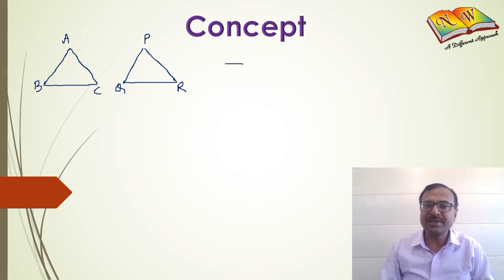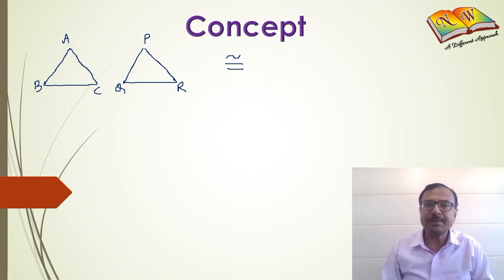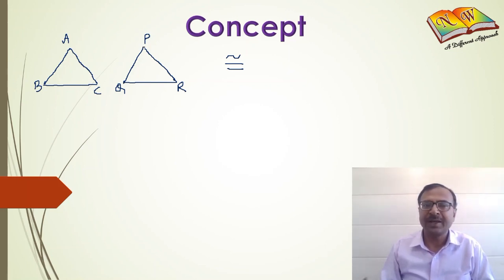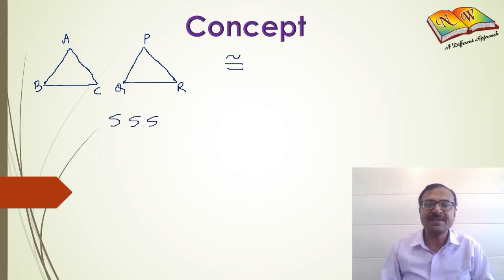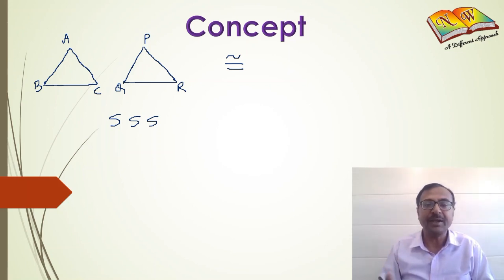This is the symbol which we use for congruence of triangles. There are some criteria through which we can prove that two given triangles are congruent. One of the criteria is SSS — that means if all three sides of one triangle are equal to the corresponding sides of the other triangle, then the two triangles may be said to be congruent.